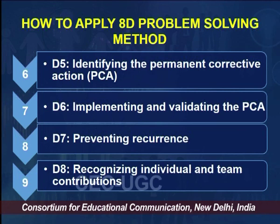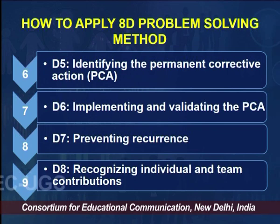D5 is identifying the permanent corrective action, or PCA. Here we identify an action plan that can be implemented permanently. If there was an accident and we found the root cause, we must implement a solution so that any such or similar accident will not happen in the future. The purpose is not just to handle the immediate incident but to take care of future occurrences — that is why a permanent corrective action is required.